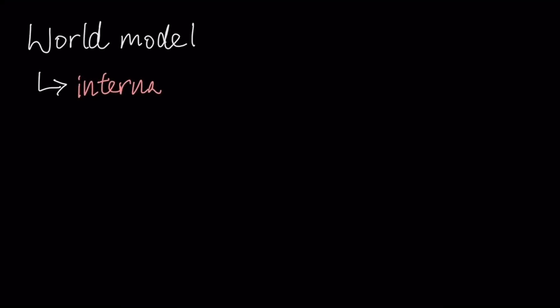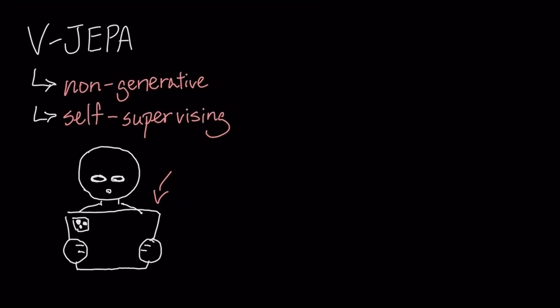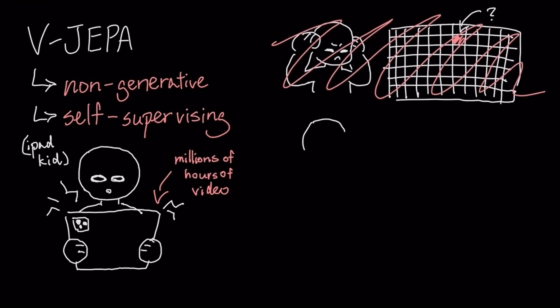A world model is an internal simulation of reality that an AI builds to understand physics and causality. And Meta's first real attempt at this is V-JEPA. V-JEPA is a non-generative, self-supervised model. It learns by watching millions of hours of video, but it doesn't try to predict every single missing pixel. Instead, it masks out large chunks of the video and learns to predict the missing information in a high-level, abstract representation space.